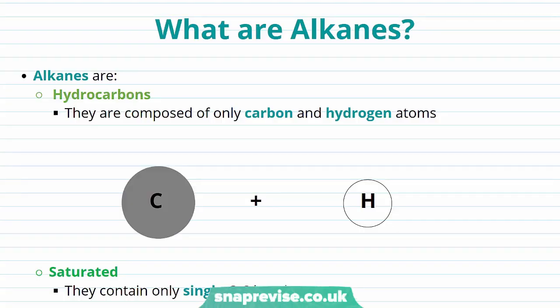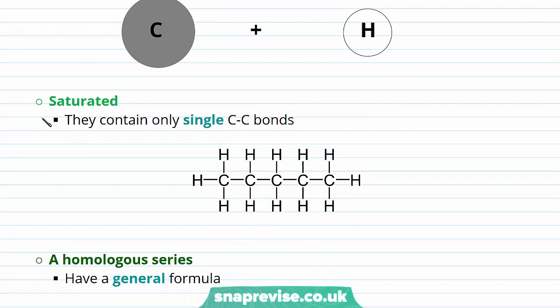You may well have met alkanes before. Alkanes are hydrocarbons and what we mean by that is they're composed only of carbon and hydrogen atoms. Alkanes are saturated. What we mean by that is they contain only single carbon to carbon bonds. So here we have an example of an alkane. You can see it's composed only of carbon and hydrogen atoms and there are only single carbon to carbon bonds. We can go ahead and name this alkane.